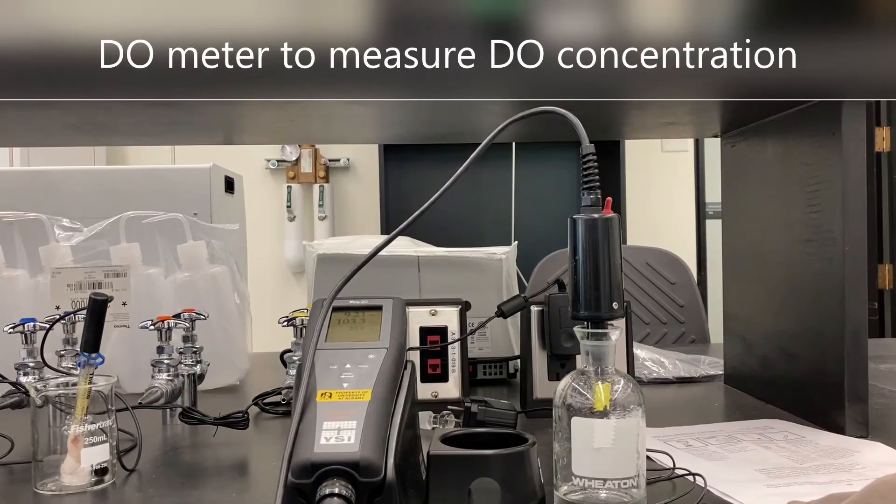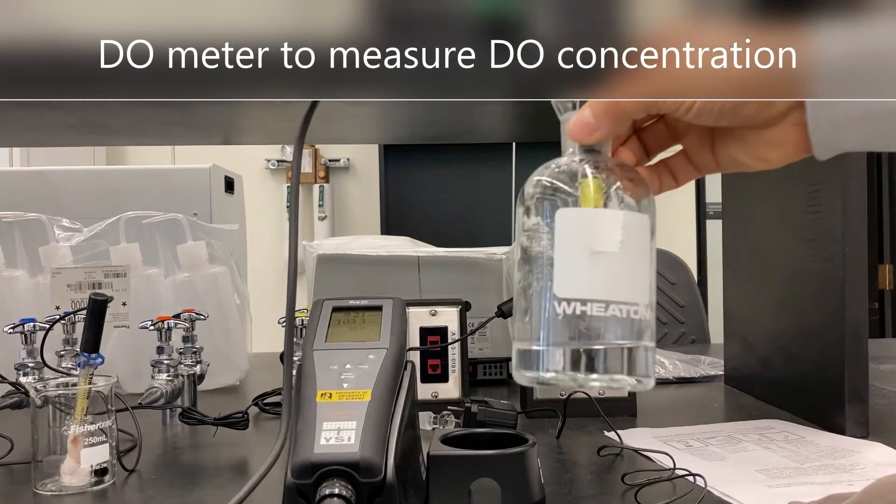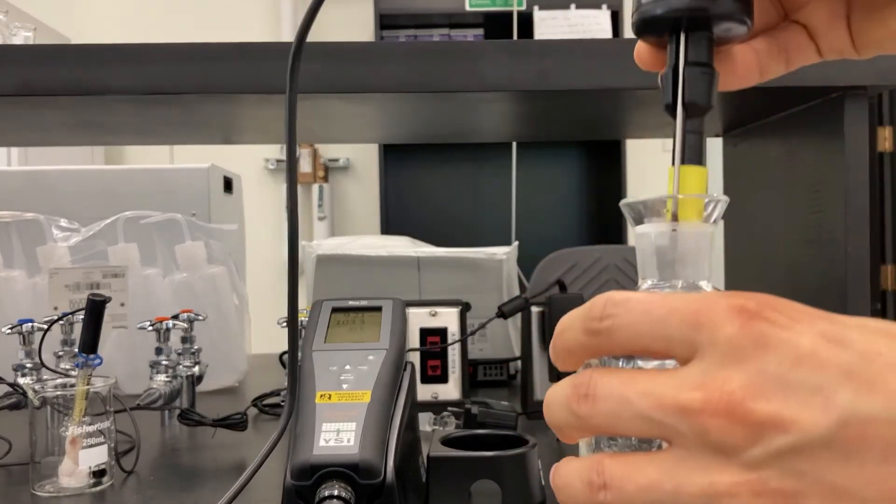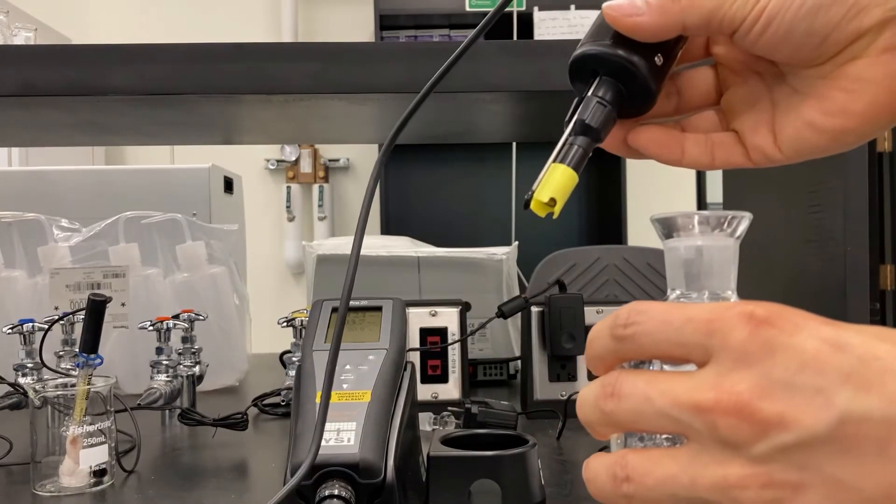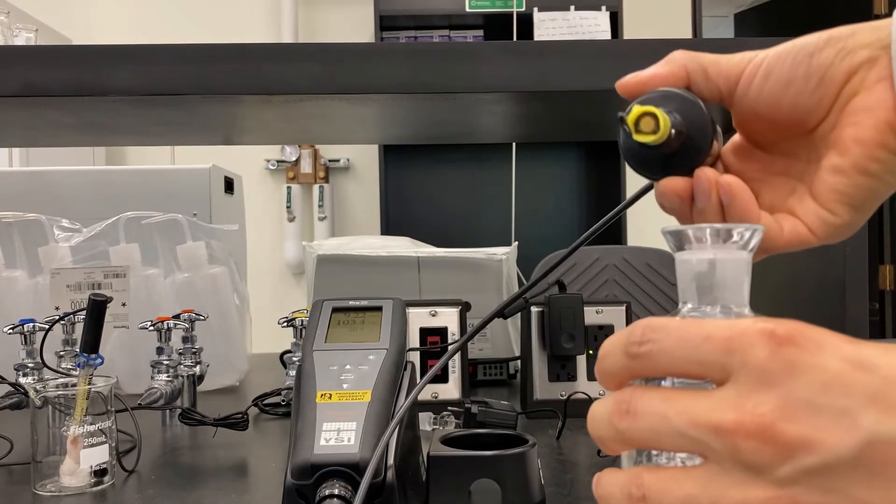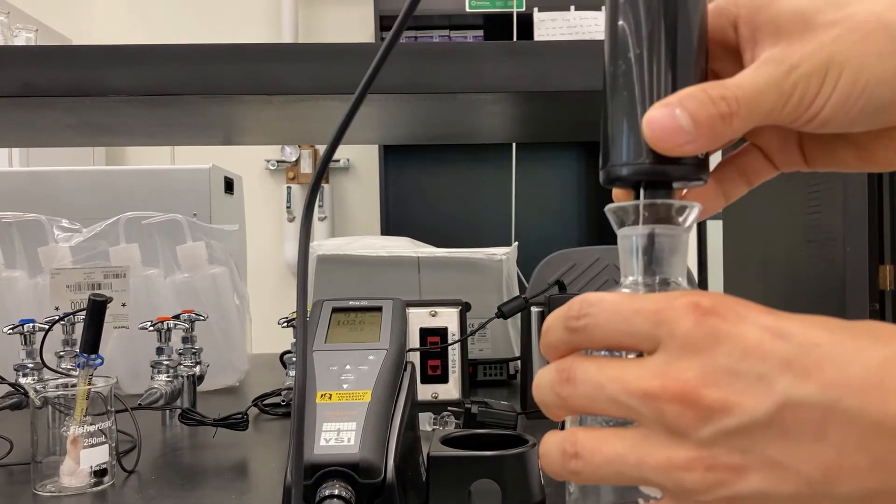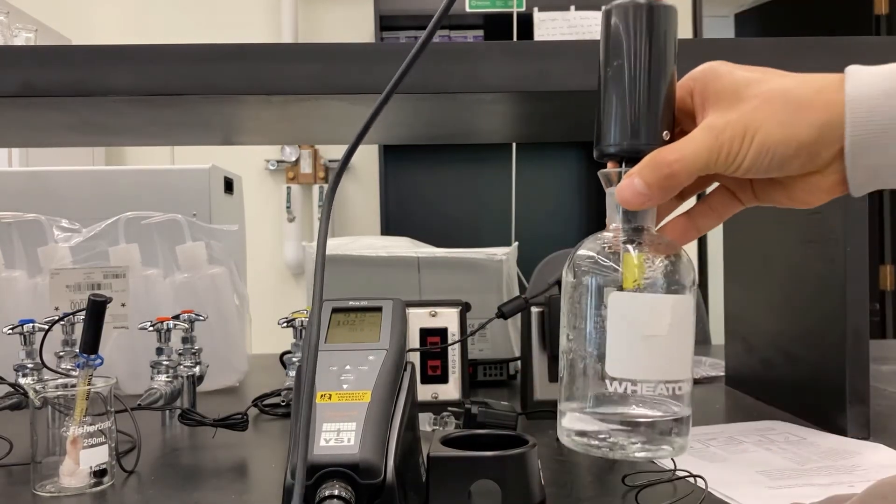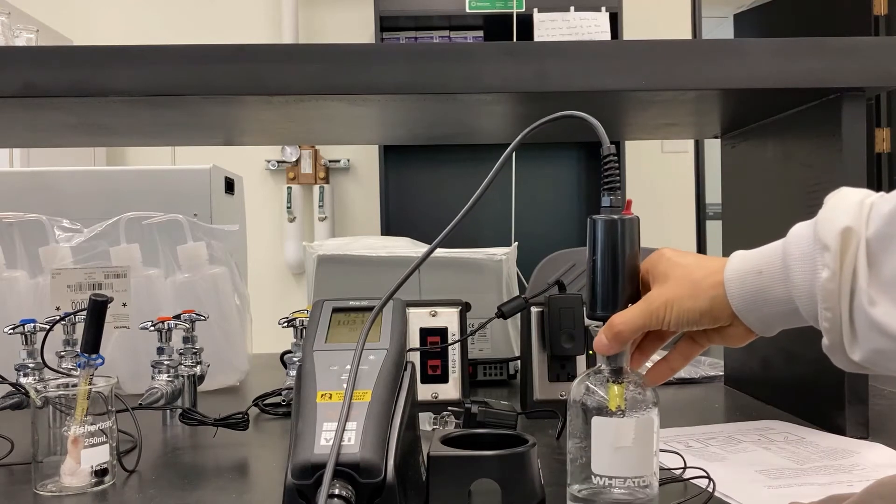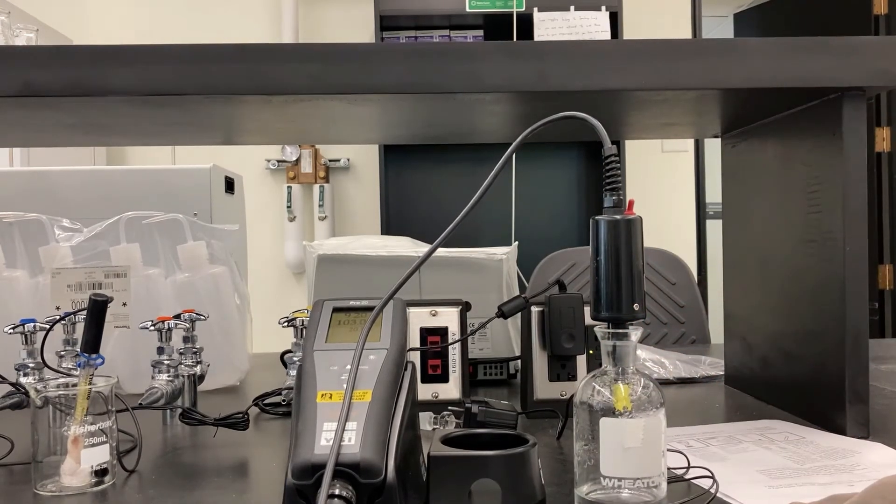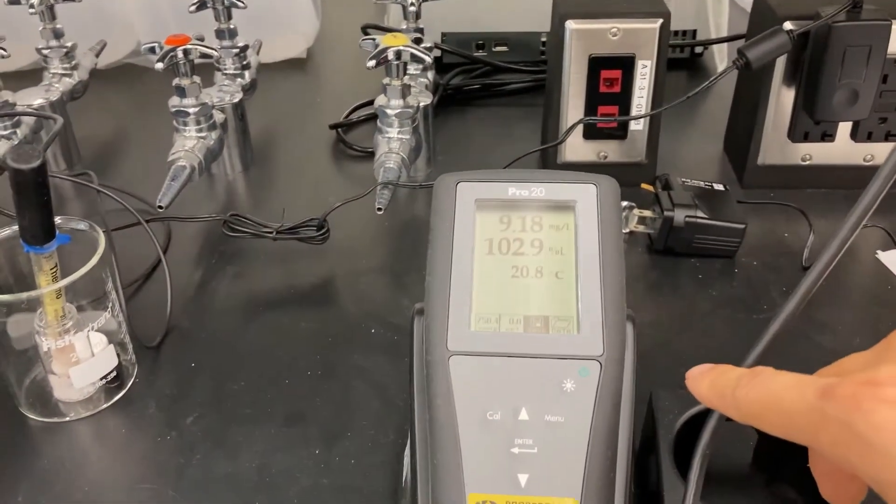This is a DO meter we are going to use to measure dissolved oxygen concentration in water. This is a DO probe, and you can put this end into the water to measure DO concentration. You can read numbers on display to check the DO concentration.